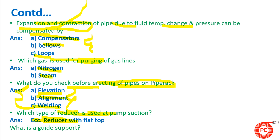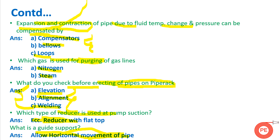The last question is: what is a guide support? A guide support allows horizontal movement of the pipe. There is a gap between the support and the pipe, so the pipe can move within that gap. This horizontal movement of the pipe is permitted when a guide support is provided.